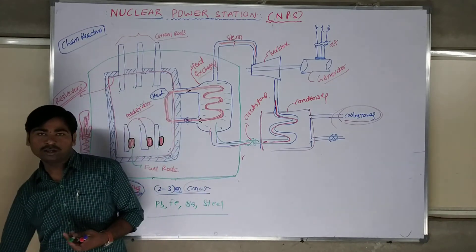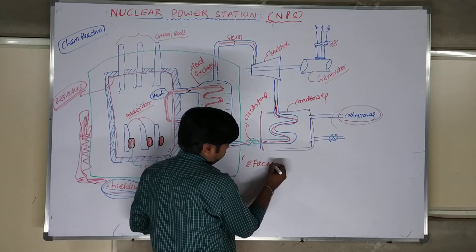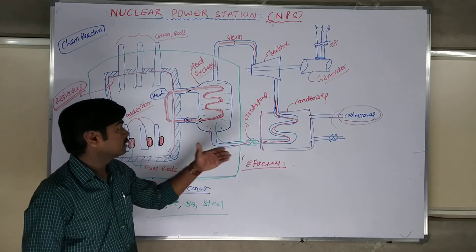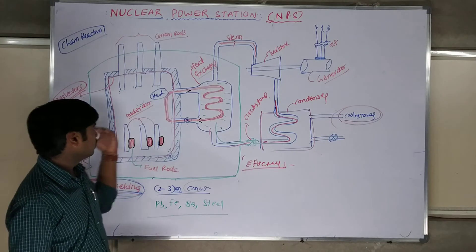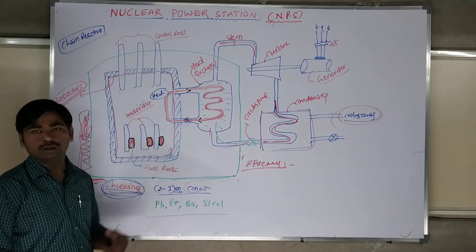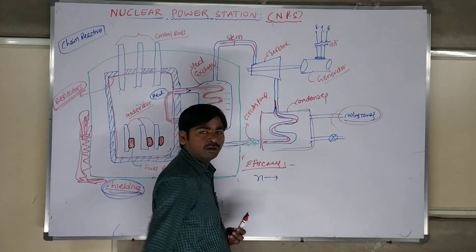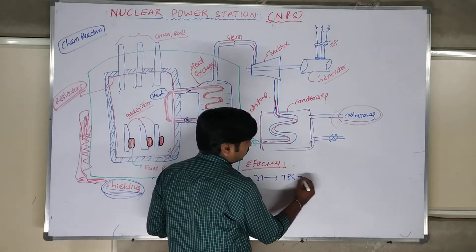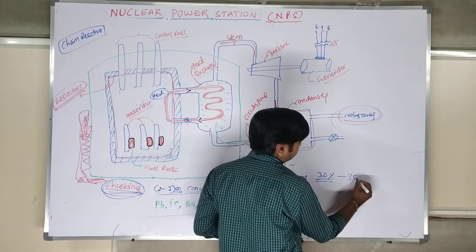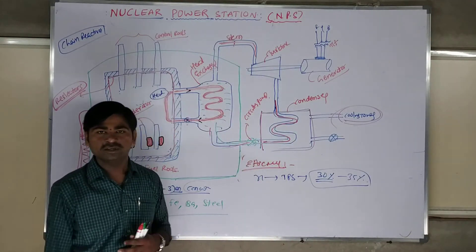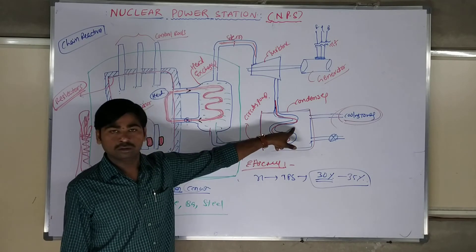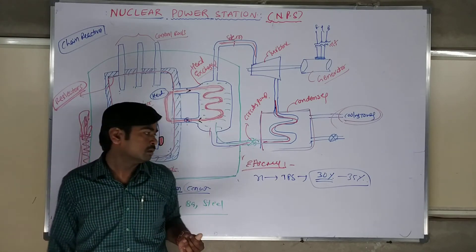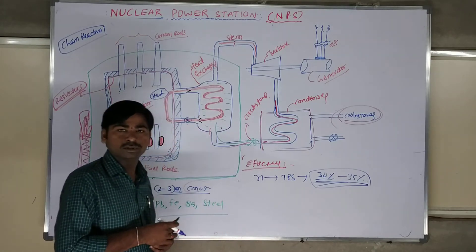The final point is efficiency. Efficiency is output divided by input. The nuclear reactor efficiency is the ratio of electrical output to the thermal input given to the nuclear reactor. Generally, the efficiency of a nuclear reactor is approximately 30% to 35%, similar to a thermal power station. The lower efficiency is because more heat is lost in the condensation process and other processes.